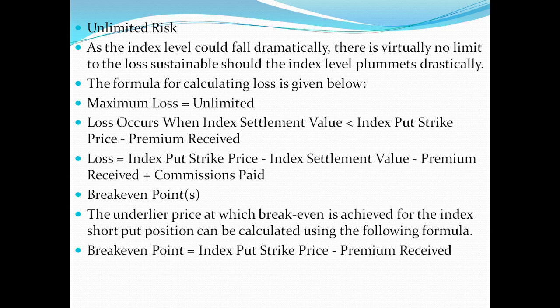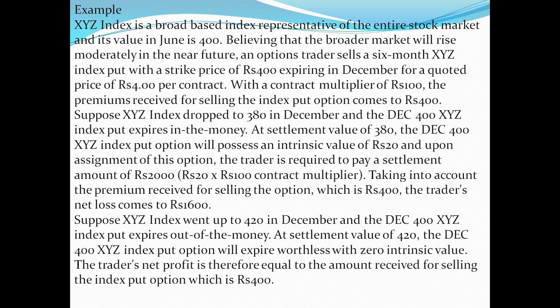Breakeven point: the underlying price at which breakeven is achieved for the index short put position can be calculated using the following formula — breakeven point equals index put strike minus premium received.